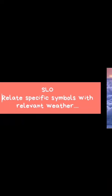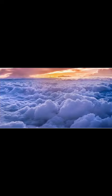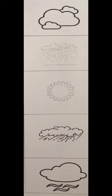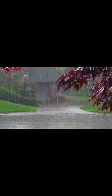Our student learning objective is to relate specific symbols with relevant weather. Today we will study about the symbols. Look — what is this weather? It is cloudy. It is sunny, and it is rainy weather. Excellent!